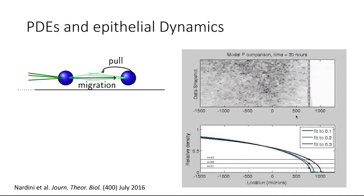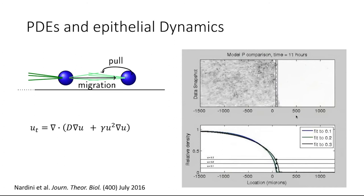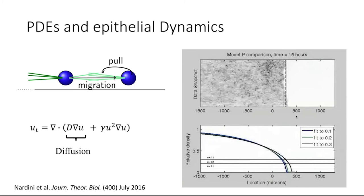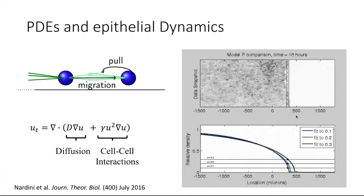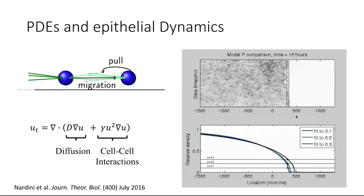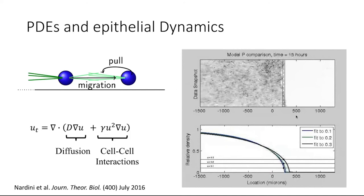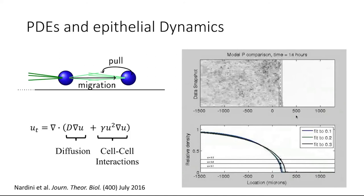Below this experiment I've depicted a simulation of a mathematical model I use to quantify the migration of the cell population into the wound area. This is a partial differential equation — a nonlinear diffusion equation model — where if we have some cell density U and we're interested in how it changes over time, the rate of change equals both a diffusion term quantifying how cells spread into the open area, plus a term incorporating cell-cell interactions.